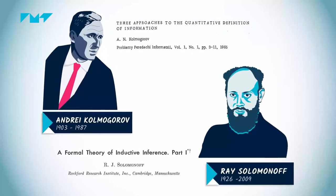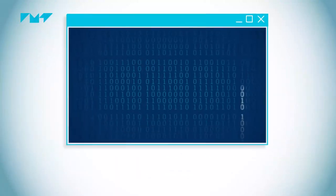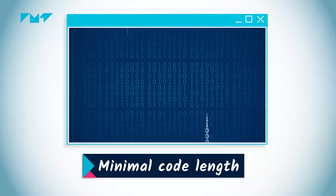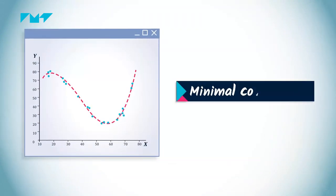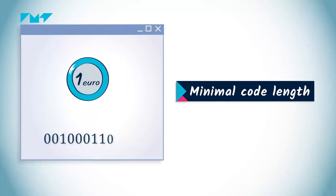Algorithmic information theory was invented 60 years ago by great mathematicians of the 20th century and pioneers of artificial intelligence. It says that information is a matter of minimal code length, that machine learning is a matter of minimal code length, and even probability is a matter of minimal code length. More generally, algorithmic information says that coding is a universal way for machines to make sense of the world.